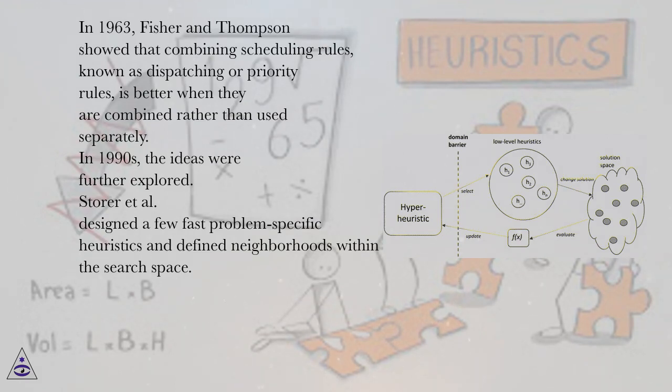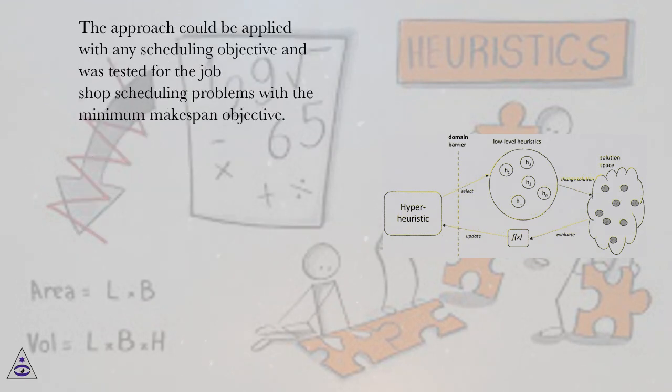Storr et al. designed a few fast problem-specific heuristics and defined neighborhoods within the search space. The approach could be applied with any scheduling objective and was tested for job-shop scheduling problems with a minimum makespan objective.